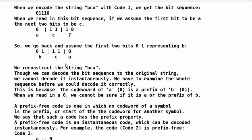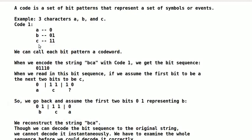Though we can decode the bit sequence to the original string, we cannot decode it instantaneously. We have to examine the whole sequence before we could decode it correctly. This is because the codeword of A, 0, is a prefix of B, 01. When we read in a 0, we cannot be sure if it is A or the prefix of B.